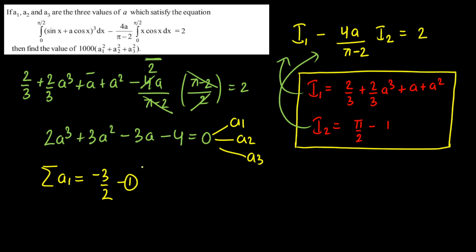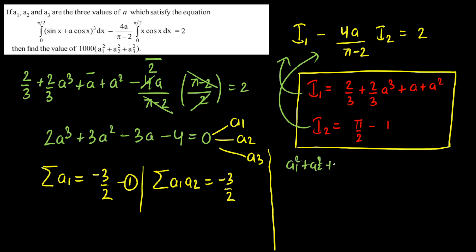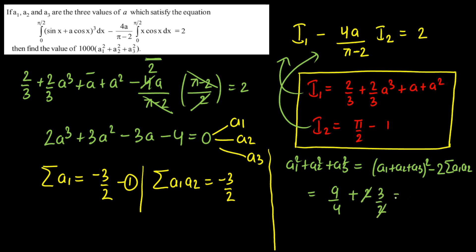The second piece of information from Vieta's formulas is the sum of products: a1a2 + a2a3 + a3a1 = −3/2. Now, a1² + a2² + a3² = (a1 + a2 + a3)² − 2(a1a2 + a2a3 + a3a1) = (9/4) − 2·(−3/2) = 9/4 + 3 = 9/4 + 12/4 = 21/4.